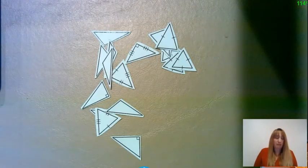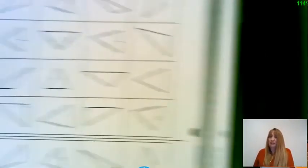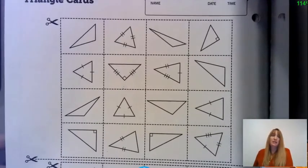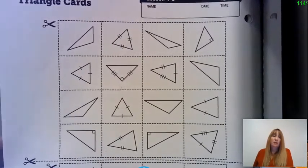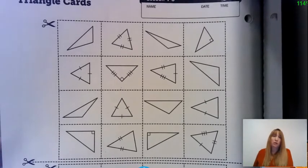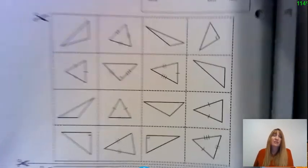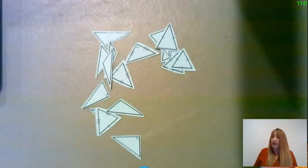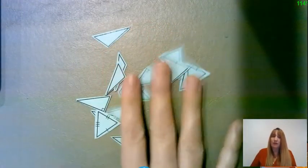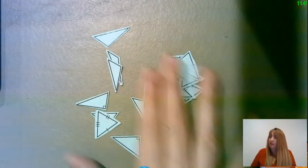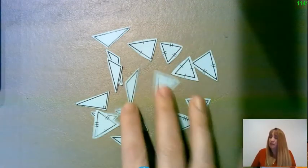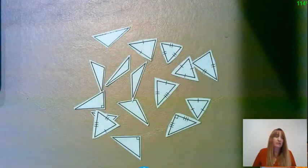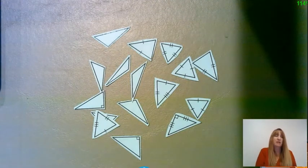You will need a Math Masters page 262 and it looks like this. You have a bunch of triangle cards and you're going to trim those out. When you do that, make sure you trim close to the triangle because that's going to give you a little bit more room. I have mine on blue paper, and I made sure that I didn't cut off all those little lines that you can see there.